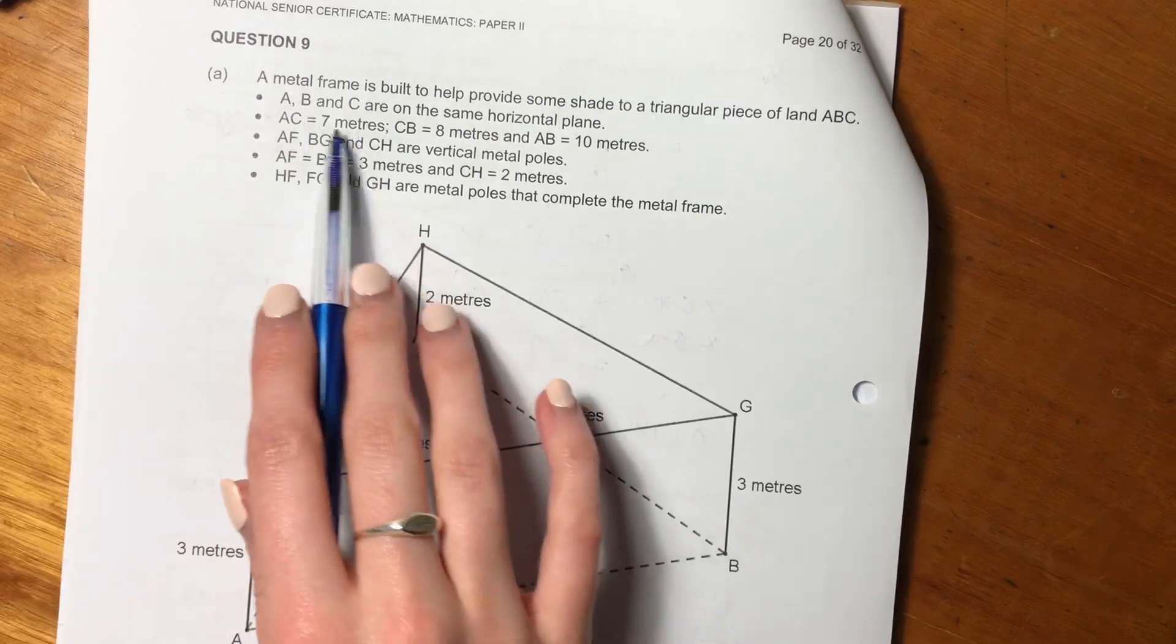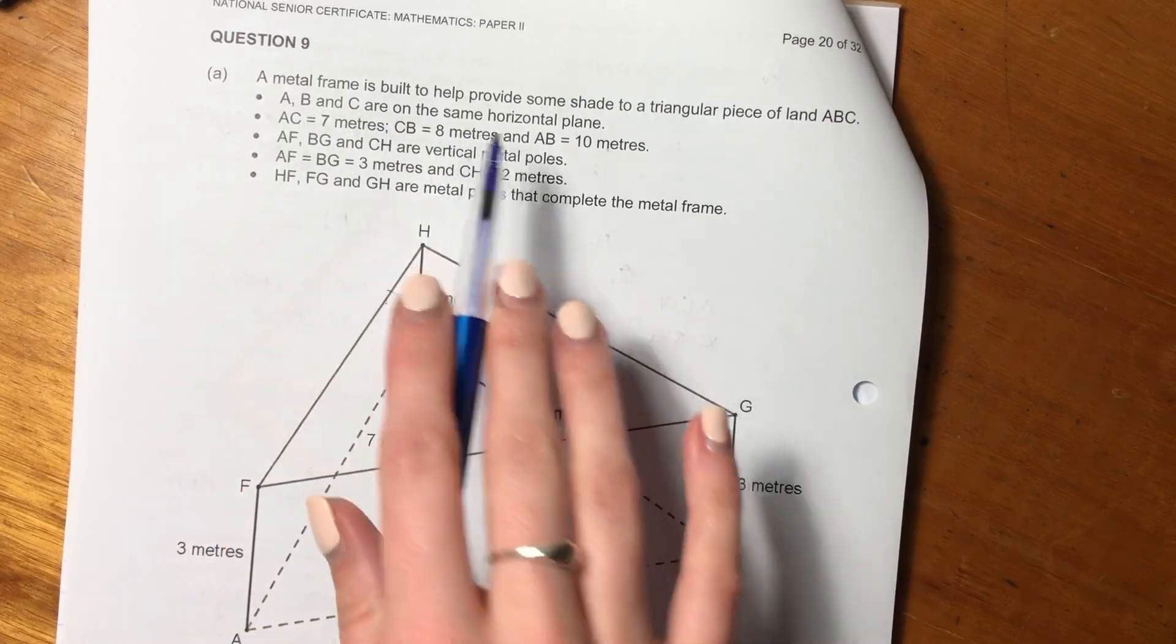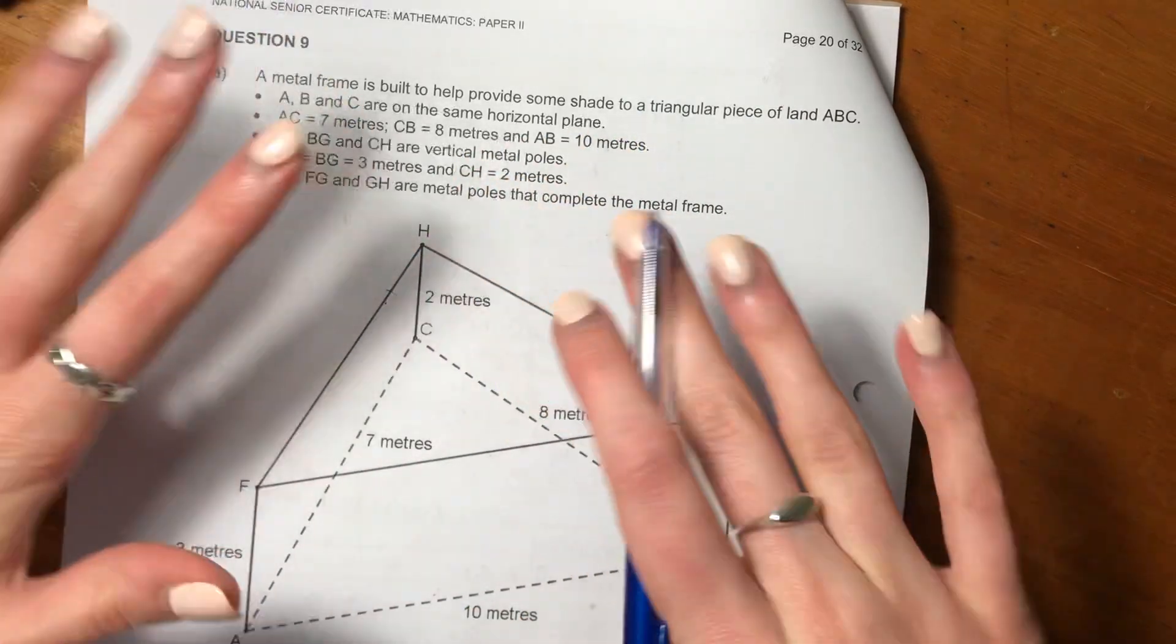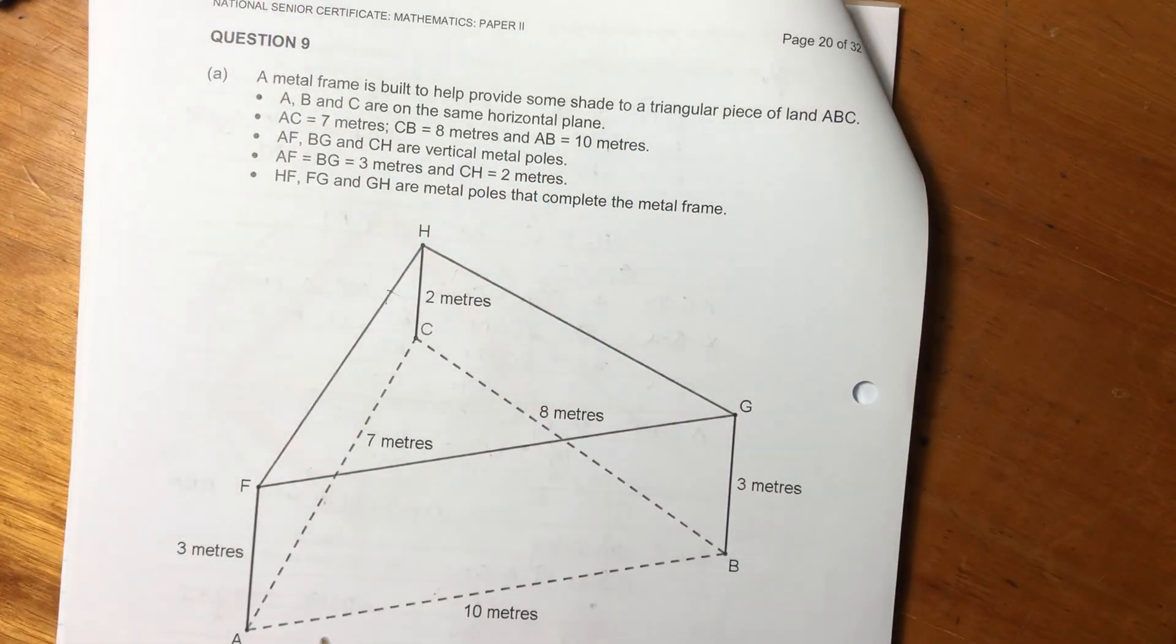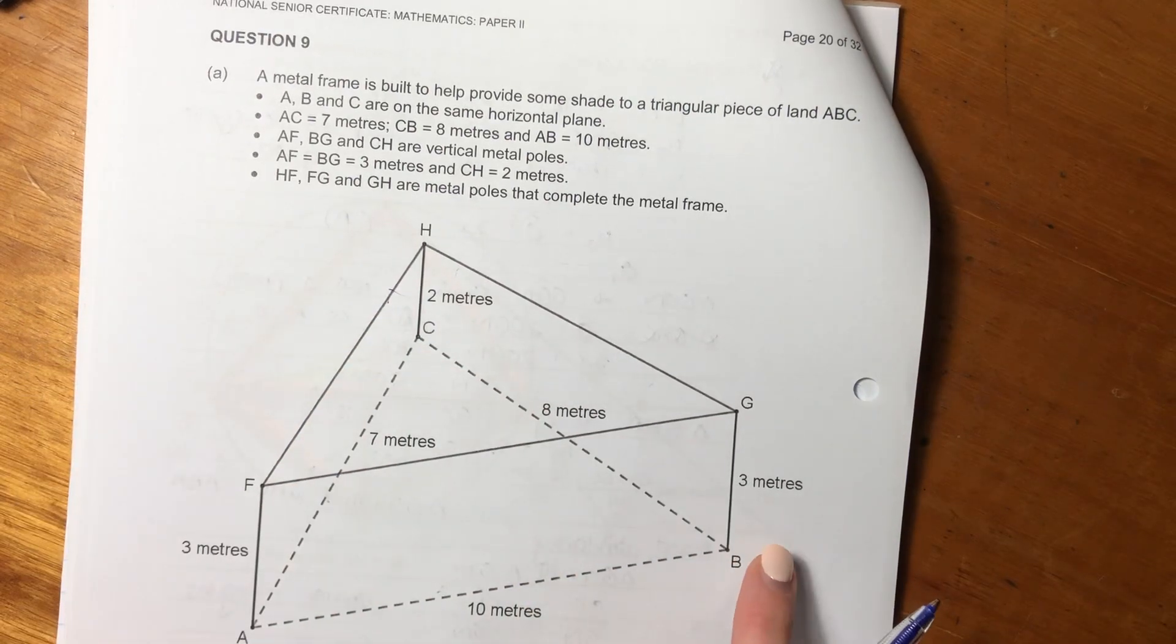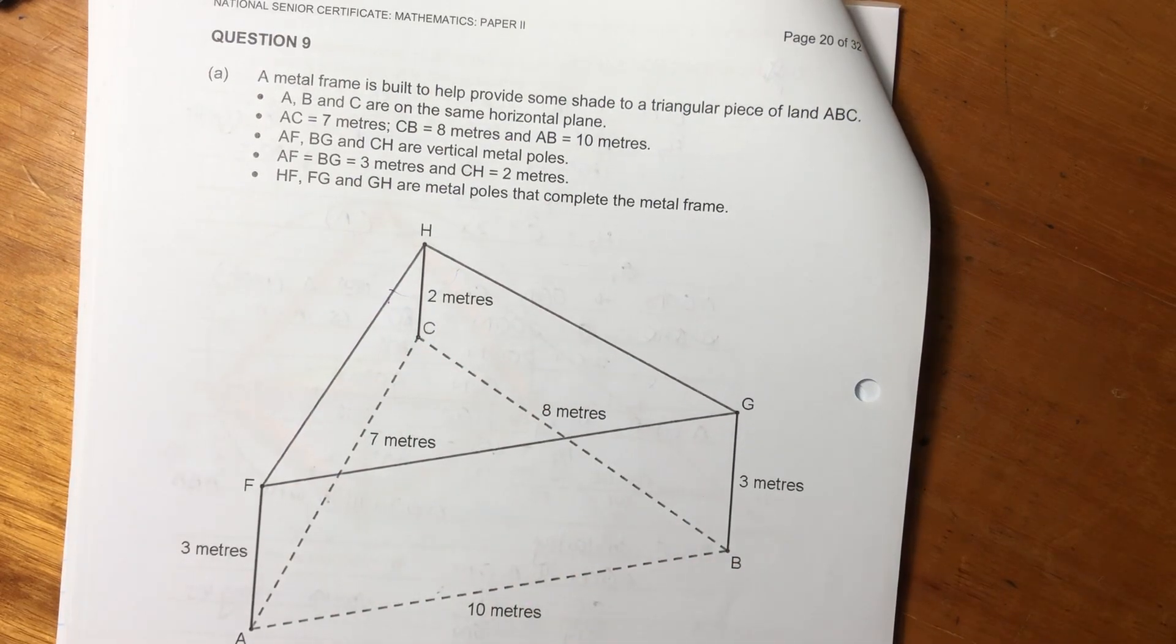Then it says ABC - A, B and C are in the same horizontal plane, so basically it's on a flat surface with no gradient. It says AC is seven meters, CB is eight meters, and AB is 10 meters. So they've given us some lengths.